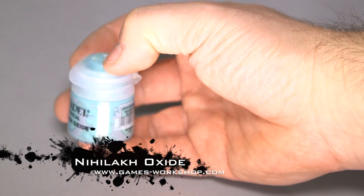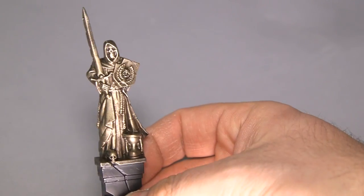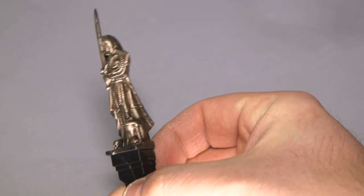It's a wash, it's blue, and it dries a little bit chalky, which makes it perfect for weathering up bronze statues like this one, giving it that verdigris look.